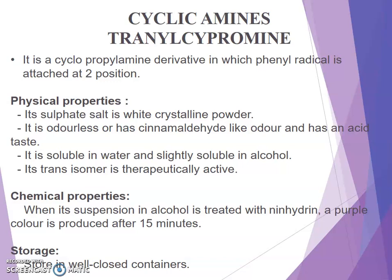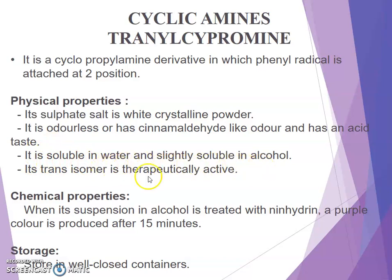Next class is cyclic amines, and the example is tranylcypromine. It is a cyclopropylamine derivative in which a phenyl radical is attached at two positions. Physical property: its sulfate salt is a white crystalline powder, odorless or with a cinnamaldehyde-like odor, with an acid taste. It is soluble in water and slightly soluble in alcohol. Its trans isomer is therapeutically active. Chemical property: when its suspension in alcohol is treated with ninhydrin, a purple color is produced after 15 minutes. Storage: store in a well-closed container.